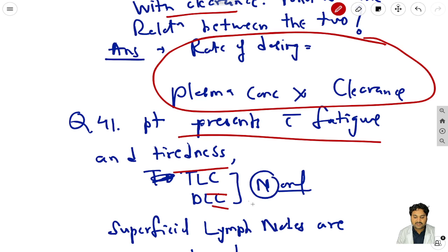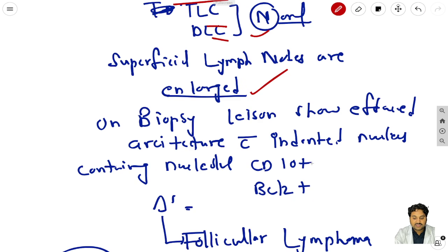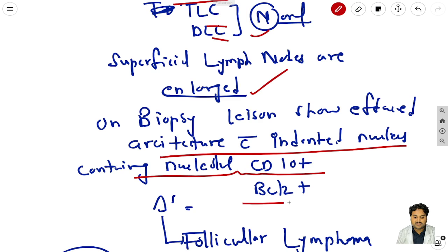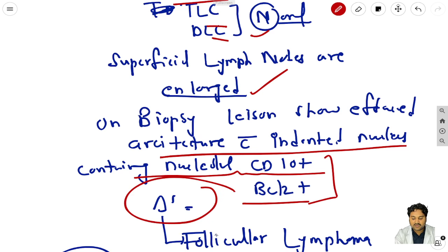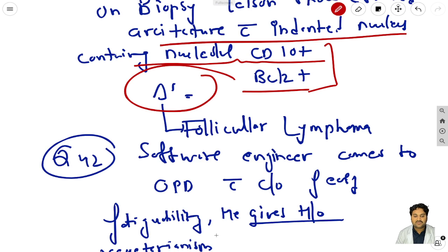Question 41: a patient presents with fatigue and tiredness; TLC and DLC are normal; superficial lymph nodes are enlarged. Biopsy shows effaced architecture with indented nucleus, CD10 positive, BCL2 positive - the answer is follicular lymphoma. All these markers clearly indicate follicular lymphoma, and superficial lymph nodes are also enlarged.